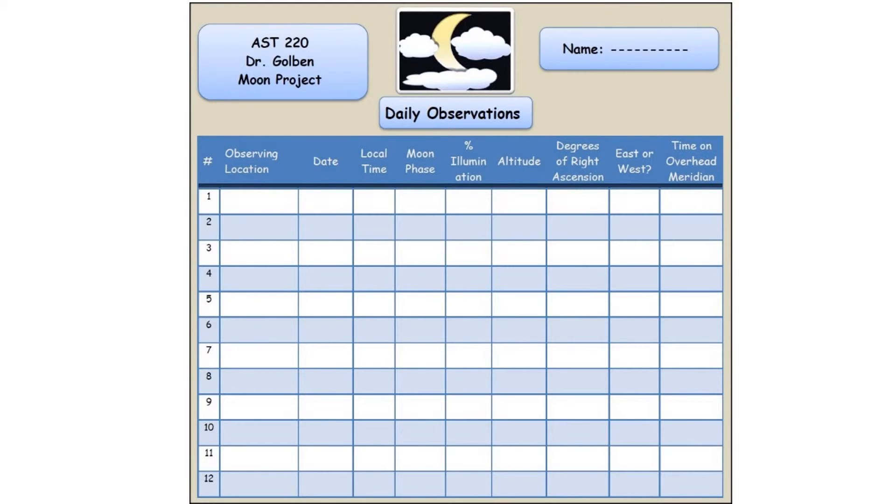I'm going to put those measurements on my worksheet. Here I am with my worksheet. First thing I'm going to do is write my name as best I can with a cursor. And then I'm going to write my observing location. And the date, so I'll say June 1st. Local time, we'll say it was 10 p.m. Moon phase, it was a waxing gibbous.